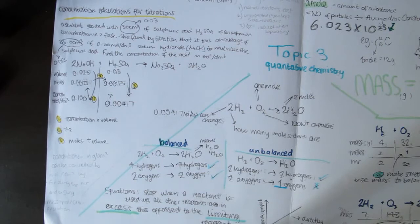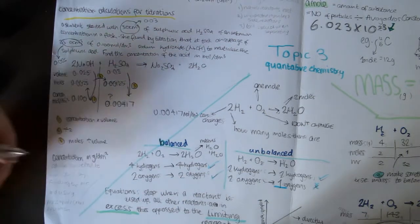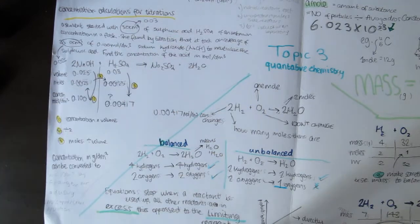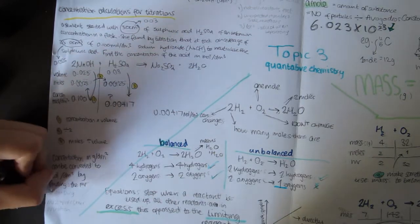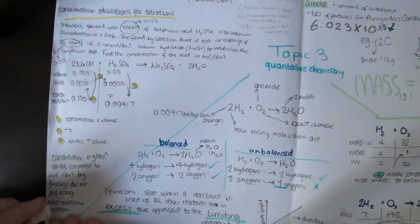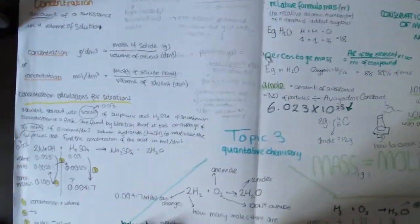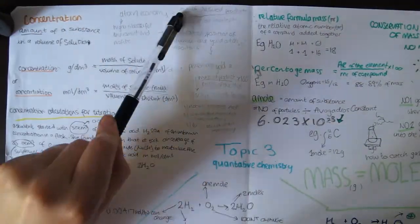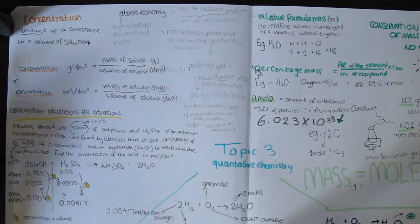Atom economy is the percentage of reactants forming useful products. Everything else is waste. This can be figured out by using the equation: Atom economy equals the MR of desired products divided by the MR of all reactants times 100. A 100% atom economy means all the products made are useful, and so the environmental friendliness increases. For example, using hydrogen and oxygen to make water, that's a 100% yield.